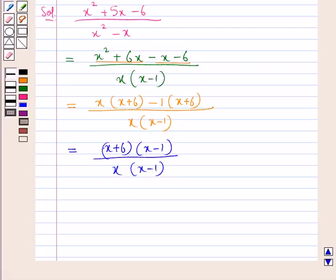Now as you can see in the numerator and the denominator the common factor is x minus 1, but we know that an algebraic fraction is in the simplest form when the polynomials in the numerator and in the denominator do not have a common factor. So we will cancel out this common factor from the numerator and the denominator and we are left with x plus 6 upon x.